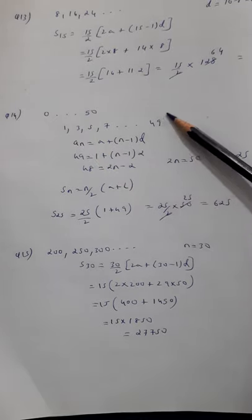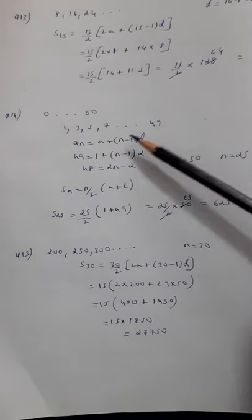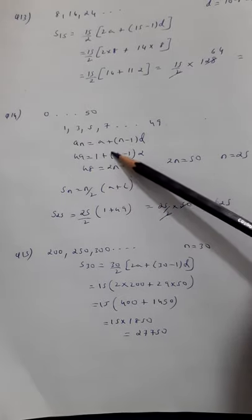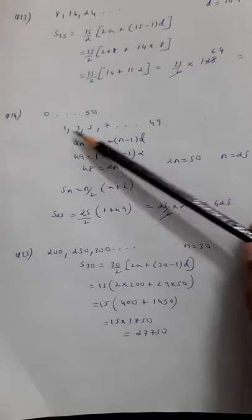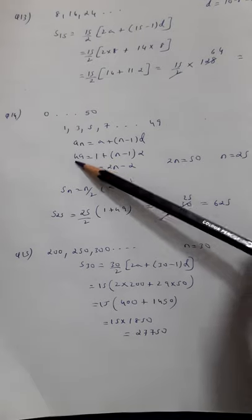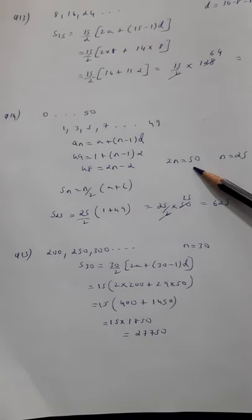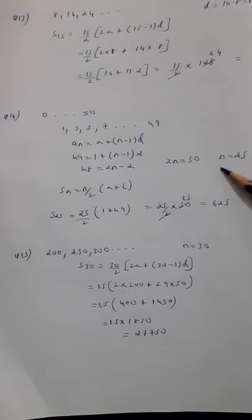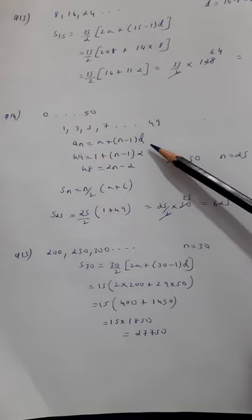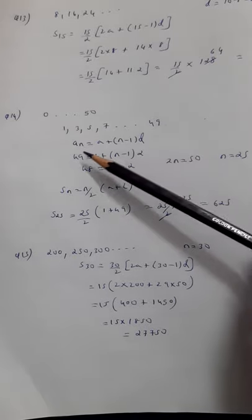Because I know the last term is 49, so I am putting that value here. a value is 1, common difference is 2, so using this formula I can easily find out the value of n. n comes out to be 25, that means there are 25 odd numbers.